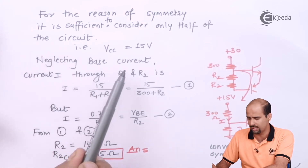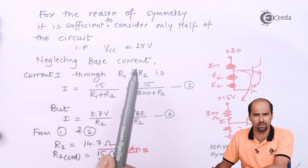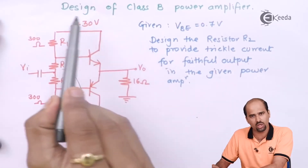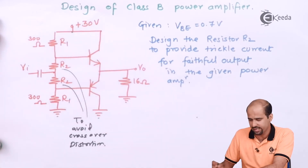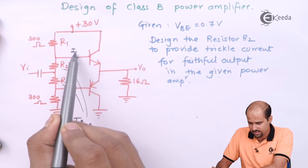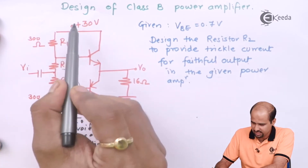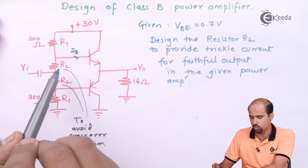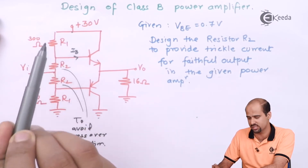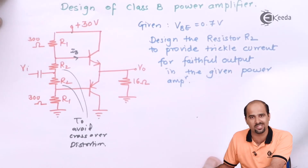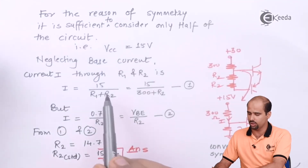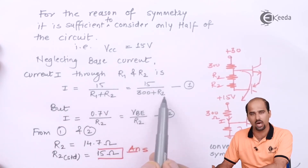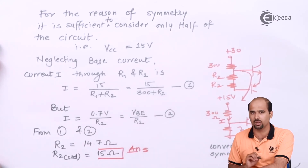Now, I don't want to include base current in the calculation. Considering only the upper portion of this circuit, I am avoiding the base current. The 15 volts coming out flows through R1 and R2 — the series combination of the two resistances. So the current I through that series combination is: I = 15 / (R1 + R2). This gives me the first equation to calculate the value of R2.